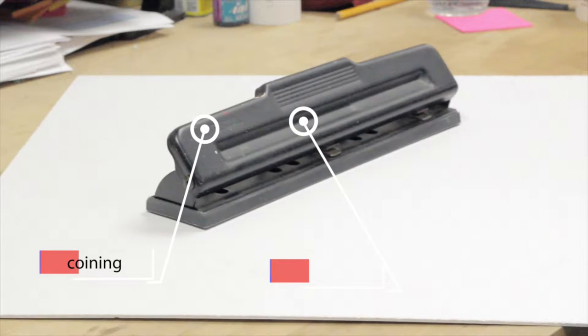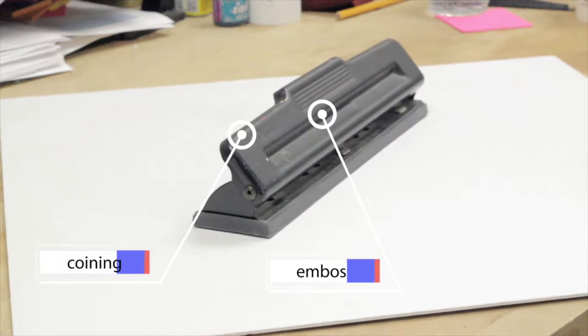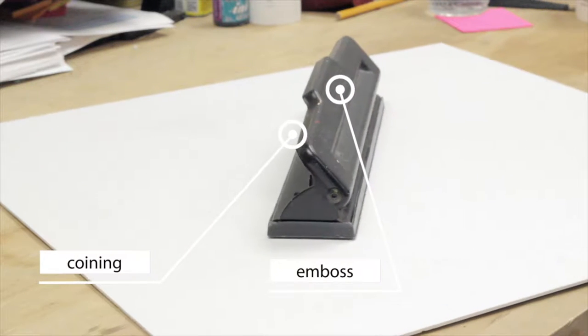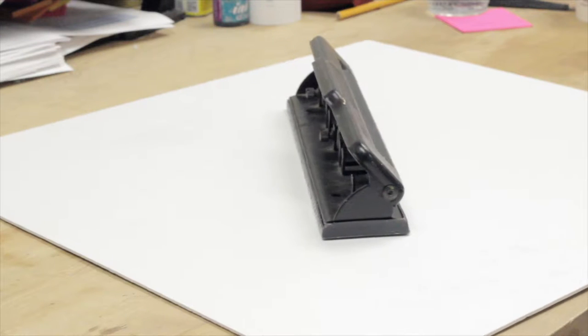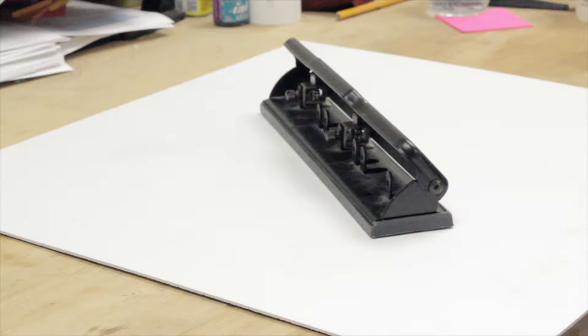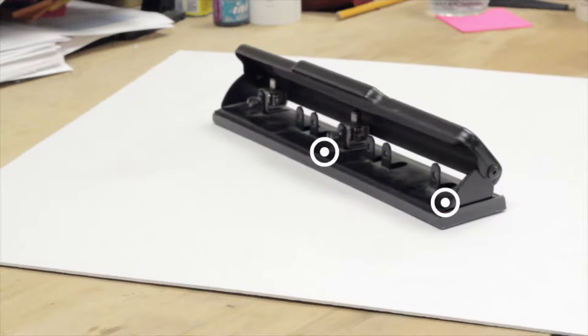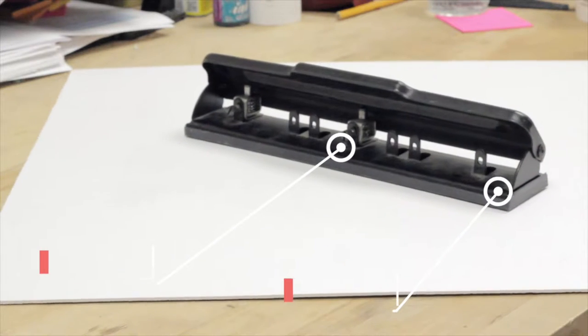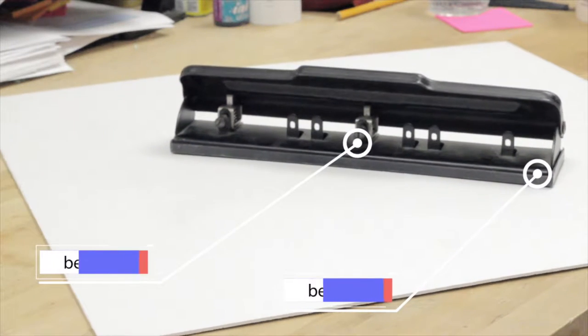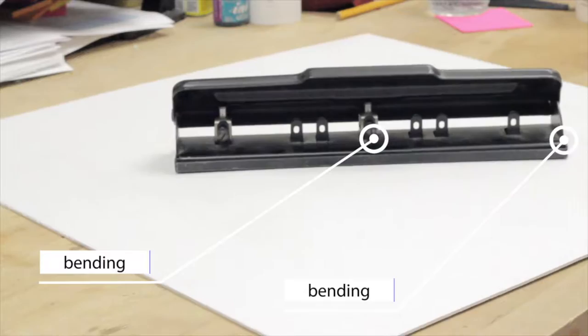Here we observe the different stamping variations of our hole puncher. As you can see, coining is used to display the logo. The shape of the lid is embossed in order to enable the punching mechanism. Almost every other feature utilizes the bending process. The sides of the base hold the lid together and provide structure, while the lips function as puncher holders.